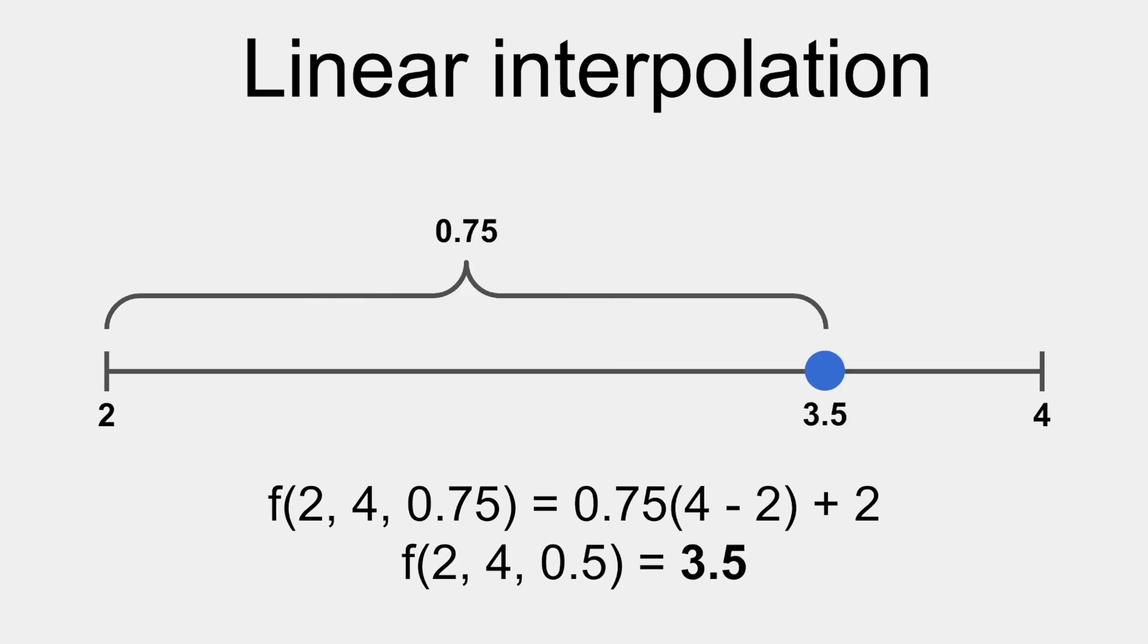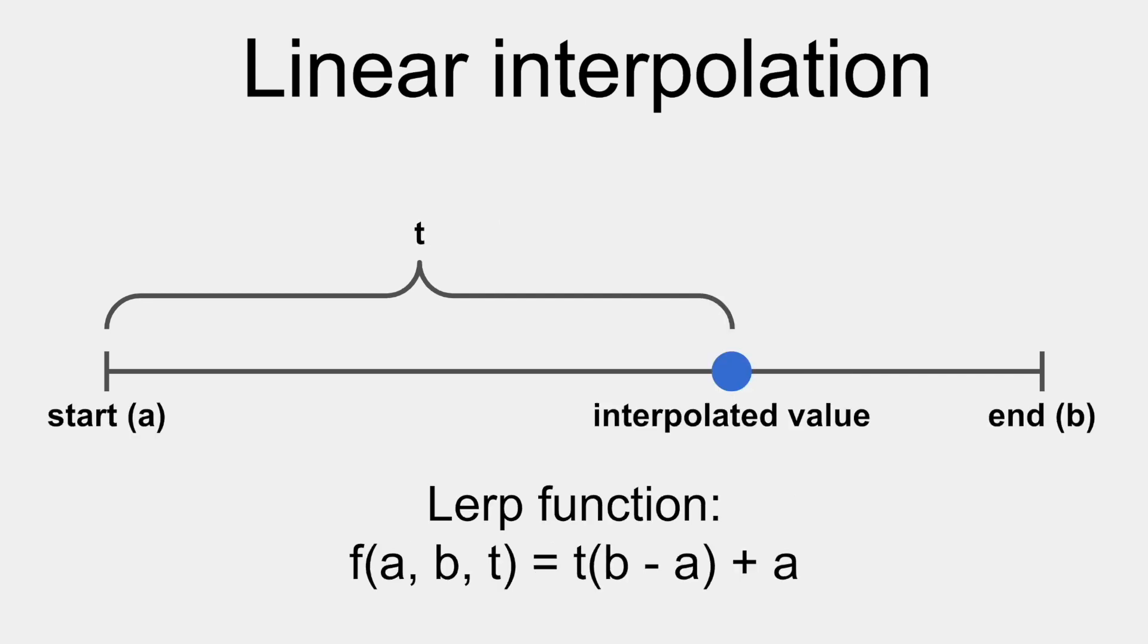Interpolating between 2 and 4 with a t value of 0.75 would be 3.5, because 3.5 is 0.75 of the way between 2 and 4. This is the expression you can use to lerp, or linear interpolate, two values for any time variable t.